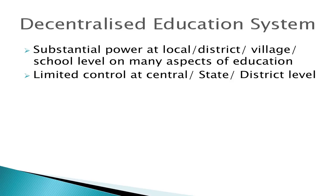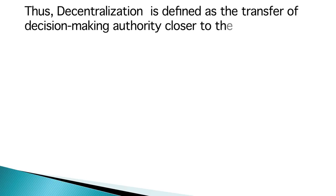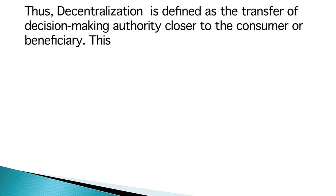By contrast, a decentralized system is characterized by the exercise of substantial power to the local, district, village or school level on many aspects of education, subject to some limited control by the central, state or district level authorities. In practice, most primary education systems have both centralized and decentralized elements. Thus, we can define decentralization as the transfer of decision-making authority closer to the consumer or beneficiary.